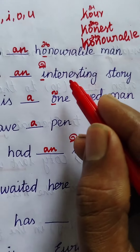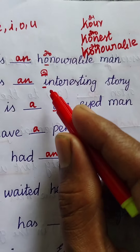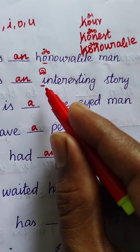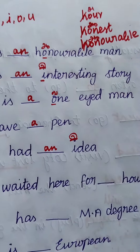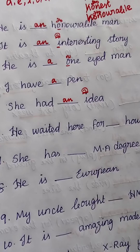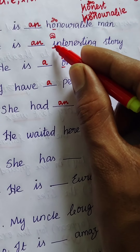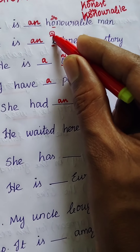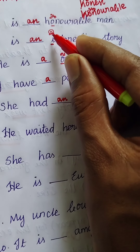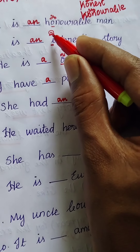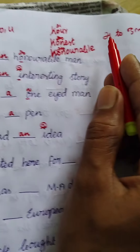The second example is 'It is a/an interesting story.' The first letter is I, a vowel letter with the vowel sound — the sound is 'e' as in 'interesting'. So it matches a vowel sound.